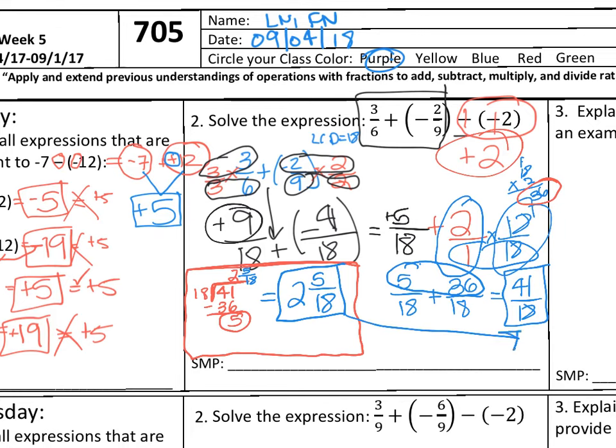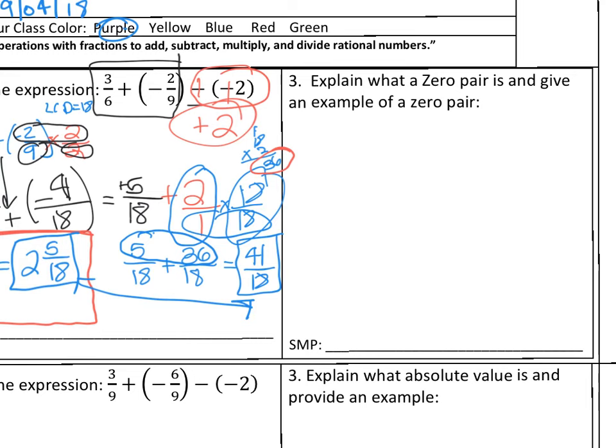So you will get a check for this answer, 41 over 18, as well as 2 and 5 eighteenths. Sorry, I'm having trouble saying that.